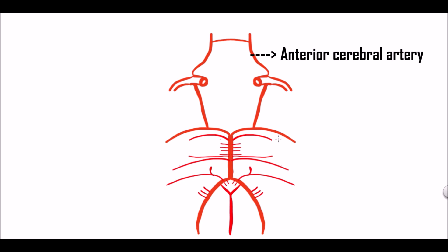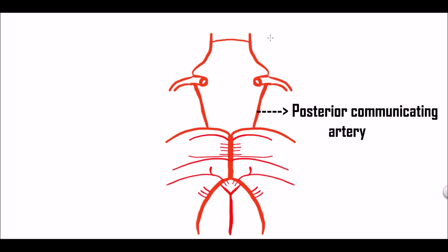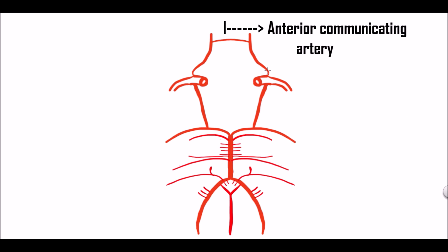Here we can see the anterior cerebral artery. We already discussed the middle cerebral artery. We can also see the posterior communicating artery, a branch of the internal carotid artery, and the anterior communicating artery which communicates the anterior cerebral arteries.